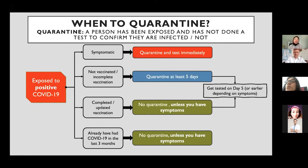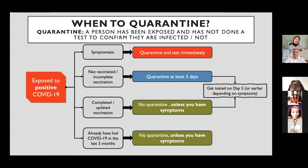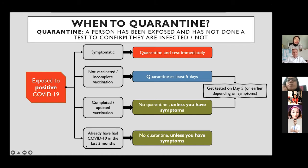A fully vaccinated and boosted person exposed to COVID does not need to quarantine unless they have symptoms. Any symptom requires staying at home regardless of vaccination history. If your child has already been infected with COVID in the last two to three months, they do not need to quarantine, as reinfection within that period is unlikely due to natural immune antibodies from the recent infection.